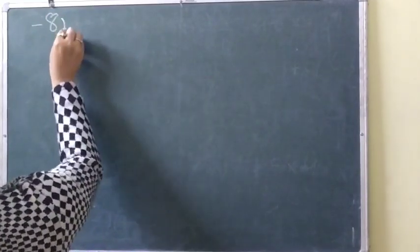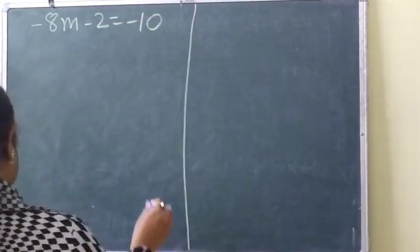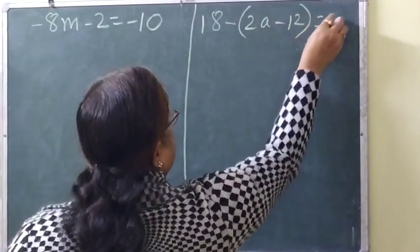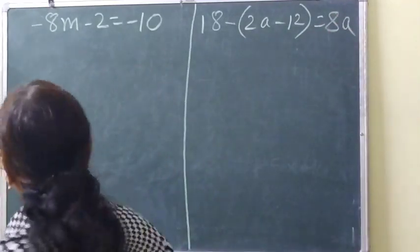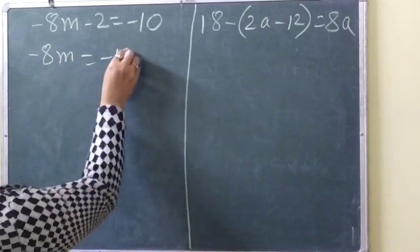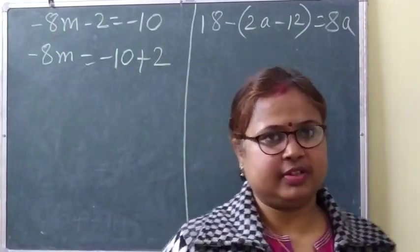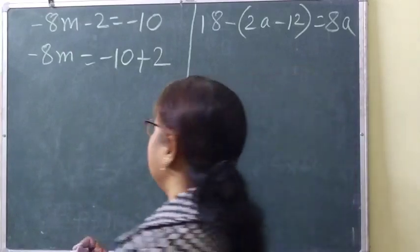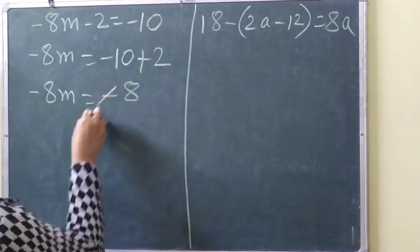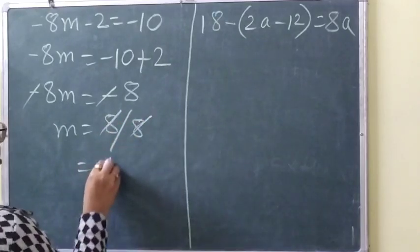Next question: minus 8m minus 2 equals minus 10. So minus 8m equals minus 10 plus 2, giving minus 8m equals minus 8. Minus and minus cancel, so m equals 8 by 8, which cancels to 1. The answer is 1.